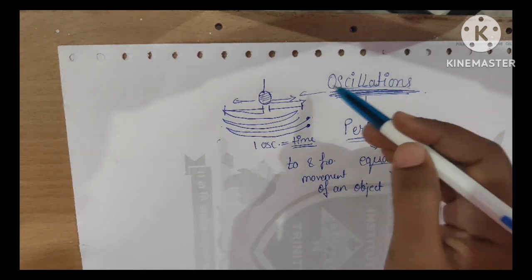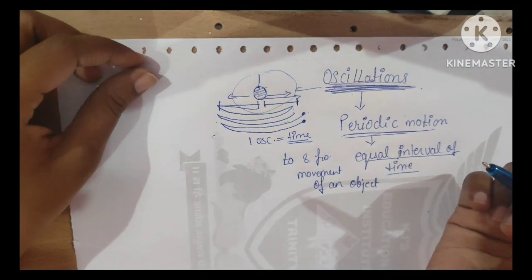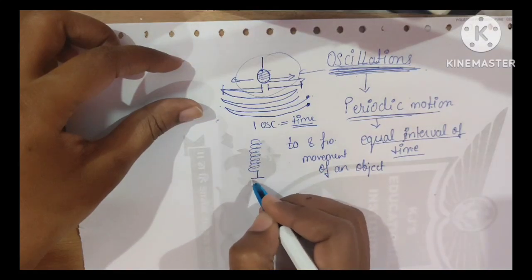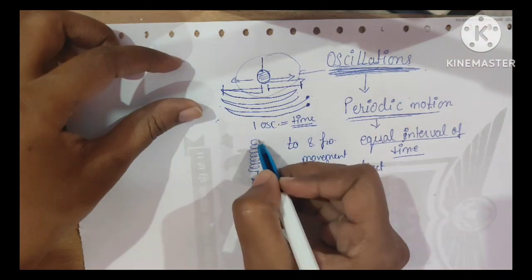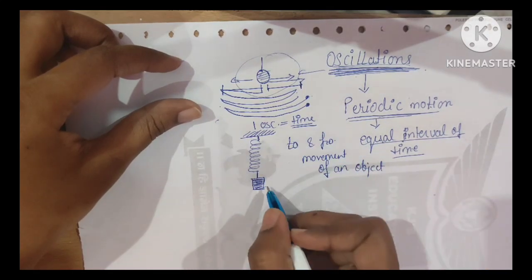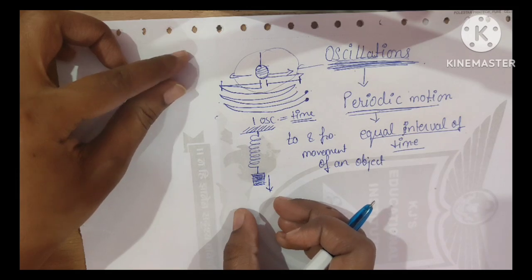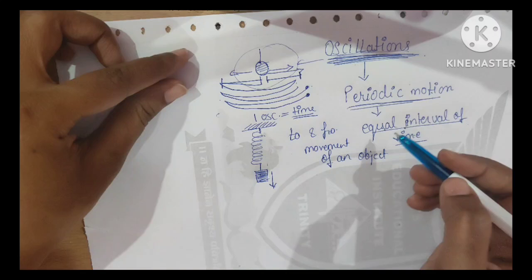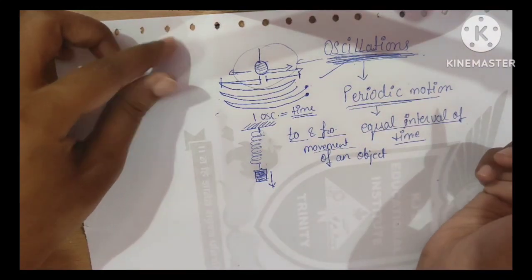Oscillation — the first example is a pendulum. Another example is a spring. If you put a heavy load or a dead mass on a spring fixed to a rigid surface and then stretch the spring, when you release it, there is a to and fro movement of the spring. This is also an oscillation.